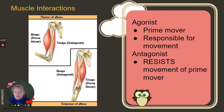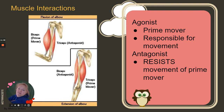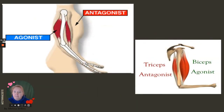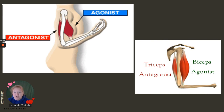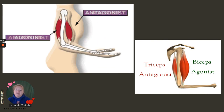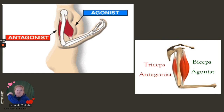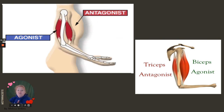Some muscle interactions: we have the agonist and the antagonist. The agonist, also called the prime mover, is responsible for the movement — the biceps does this flexion. The antagonist resists the movement of the prime mover, so the triceps resist that flexion. In the animation, when flexing, the agonist is the biceps and the antagonist is the triceps. When you move the arm down, their roles switch and swap.